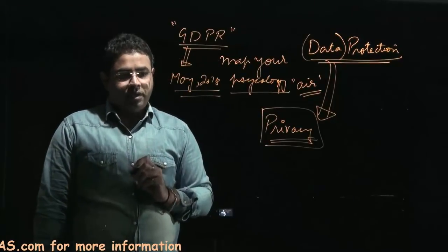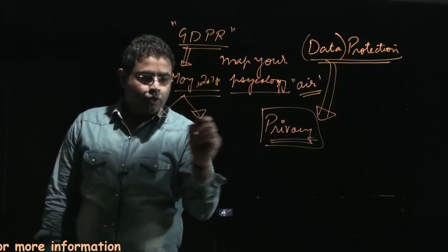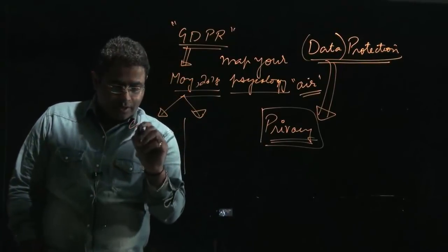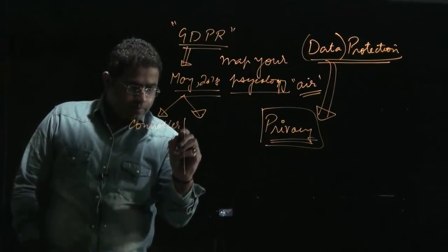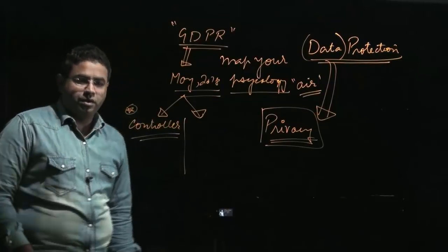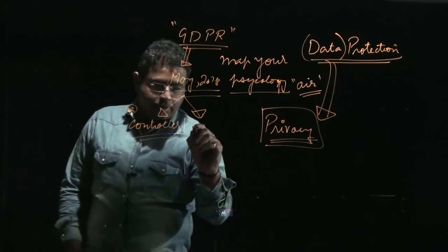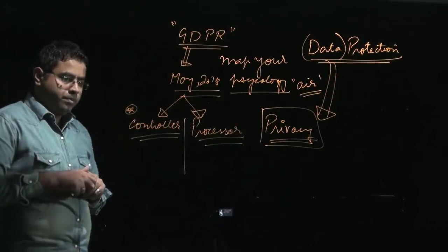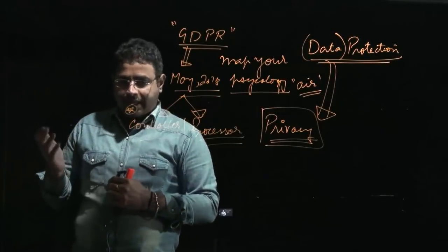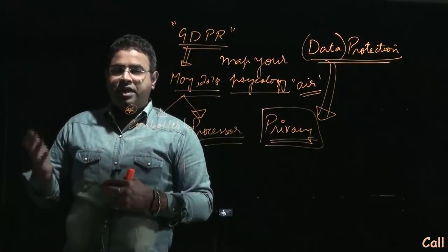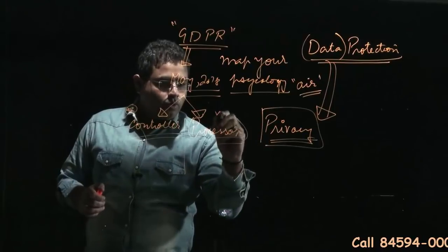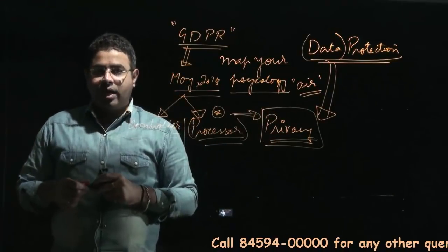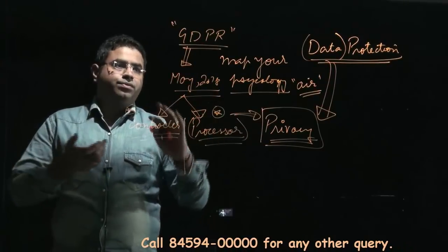As per this regulation of the European Union, two players are identified. The first player — the one asking for your data or information — has been called the controller. The second player has been called the processor. As per the General Data Protection Regulation, the controller must tell how your data will be used in the future, and the processor will not be allowed to mine data in a way that hits into your privacy domain.